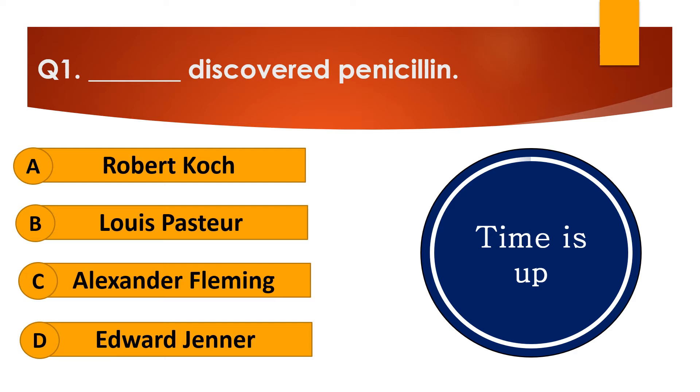Your time is up and the right answer is option C — Alexander Fleming. Alexander Fleming discovered penicillin.